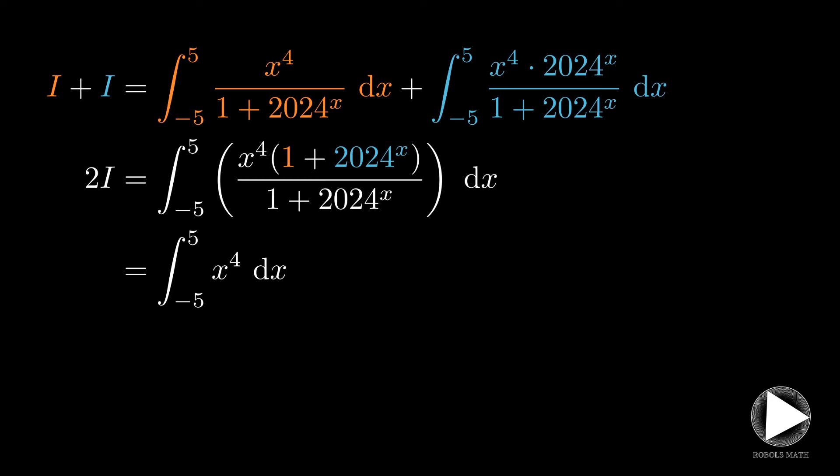Thus, twice the original integral, i, is equivalent to the integral of x to the 4 from negative 5 to 5. We can evaluate this using the power rule to come up with x to the 5 over 5 evaluated from still negative 5 to 5, which simplifies to 2 times 5 to the 4th power.